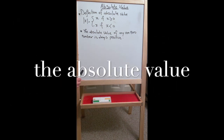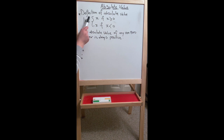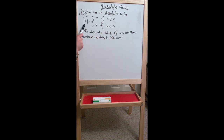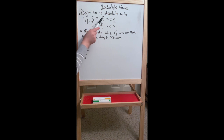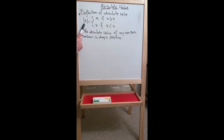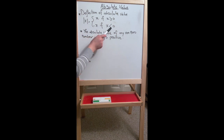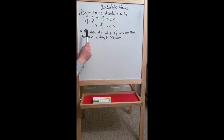Hi guys, today we're going to learn about the absolute value. The definition of absolute value is: the absolute value of x equals positive x if x is greater than or equal to 0, and the absolute value of x equals negative x if x is less than 0. We also know that the absolute value of any non-zero number has to be positive.